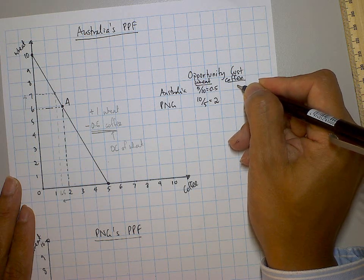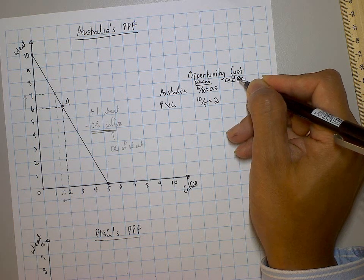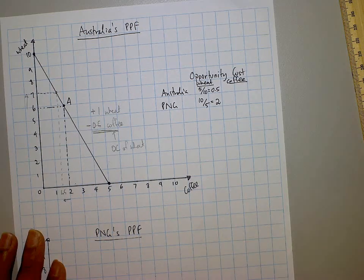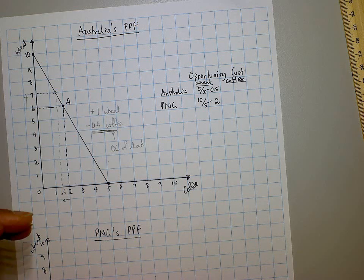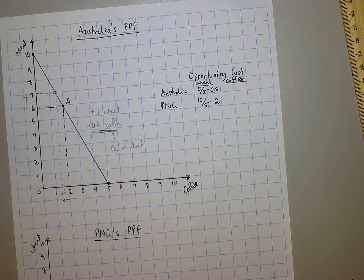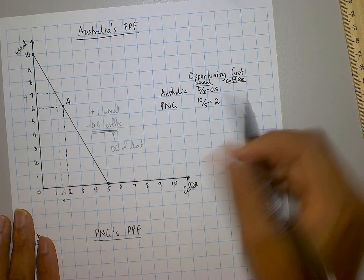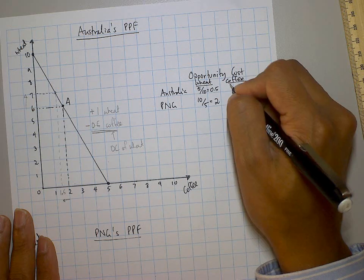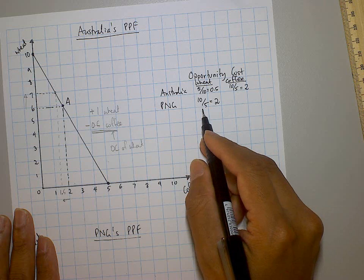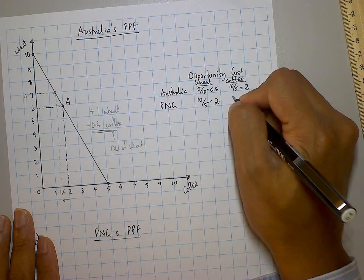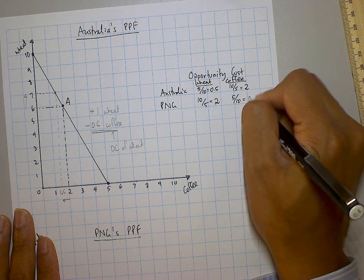To get the opportunity cost of coffee, just flip the fraction over. Rather than 5 over 10 for Australia, it's 10 over 5, giving you 2. Rather than 10 over 5 for PNG, flip it to 5 over 10, giving you one half.